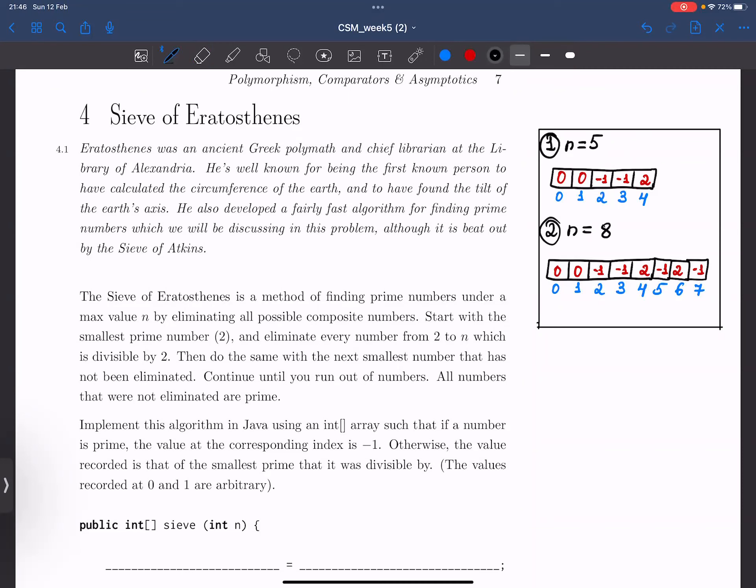The sieve of Eratosthenes is a method of finding prime numbers under a max value n by eliminating all possible composite numbers. The algorithm does so by starting with the smallest prime number, which is of course 2, and eliminating every number from 2 to n which is divisible by 2.